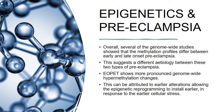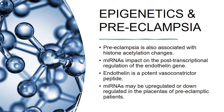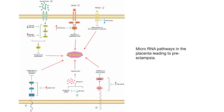Several genome-wide studies showed that methylation profiles differ between early and late onset preeclampsia, suggesting a different etiology between these two types of disease. Early onset preeclampsia shows more pronounced genome-wide hypermethylation changes, which can be attributed to earlier alterations allowing epigenetic reprogramming to install earlier in response to cellular stress. Preeclampsia is also associated with histone acetylation changes. MicroRNAs impact the post-transcriptional regulation of the endothelin gene — endothelin is a potent vasoconstrictor peptide. MicroRNAs may be up-regulated or down-regulated in the placentas of preeclampsia patients. The following image shows the microRNA pathways in the placenta contributing to preeclampsia.